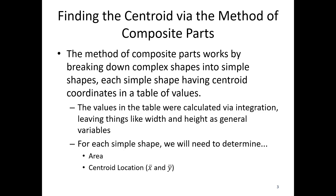Finding the centroid via the method of composite parts works by breaking down complex shapes into simple shapes — that's the composite parts piece. Each simple shape is going to have a centroid coordinate in a table of values. The values in the table were calculated via integration, leaving things like width, height, and radius as general variables. For each simple shape, we need to know the area and the centroid location x bar and y bar.